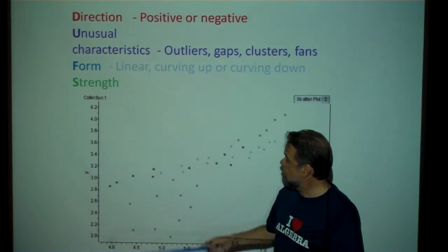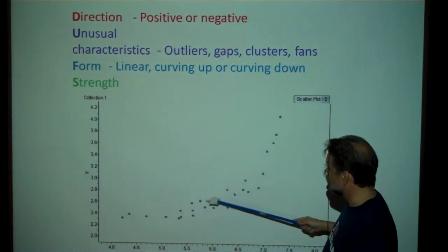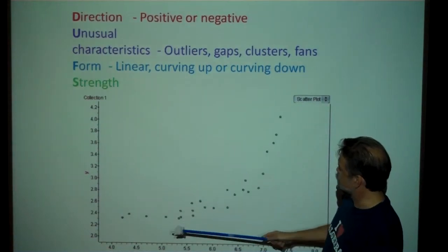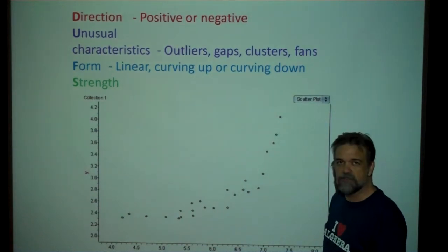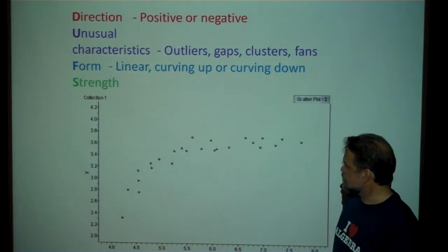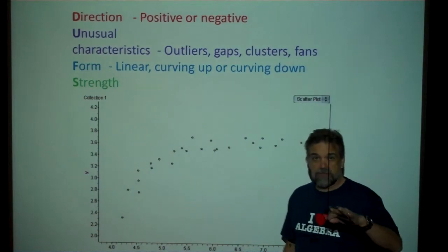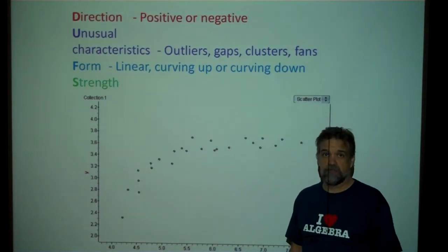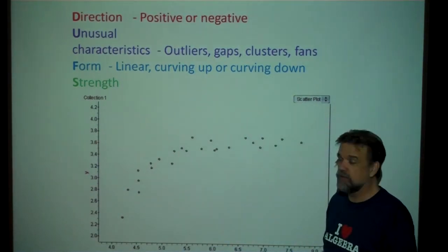We'll also talk about form — by form, I mean, does it go in a line, does it curve up, or does it curve down? One scatter plot looks a little like an exponential curve, and another looks like perhaps a square root curve. Remember all those families of functions you learned in Algebra 2? There is a reason we taught you that stuff — it's going to come in handy when you're looking at these curves and trying to figure out what the relationship might be.